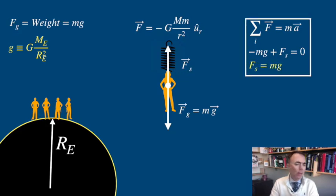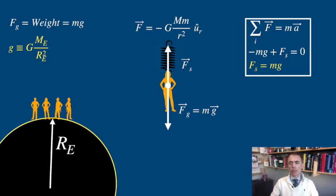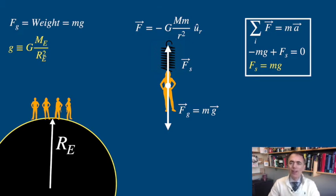But wait! The Earth is rotating, isn't it? Because the Earth is rotating, there is a centripetal acceleration to take into account here. Now we still only have two forces — gravity and the spring — but there is a net centripetal acceleration.